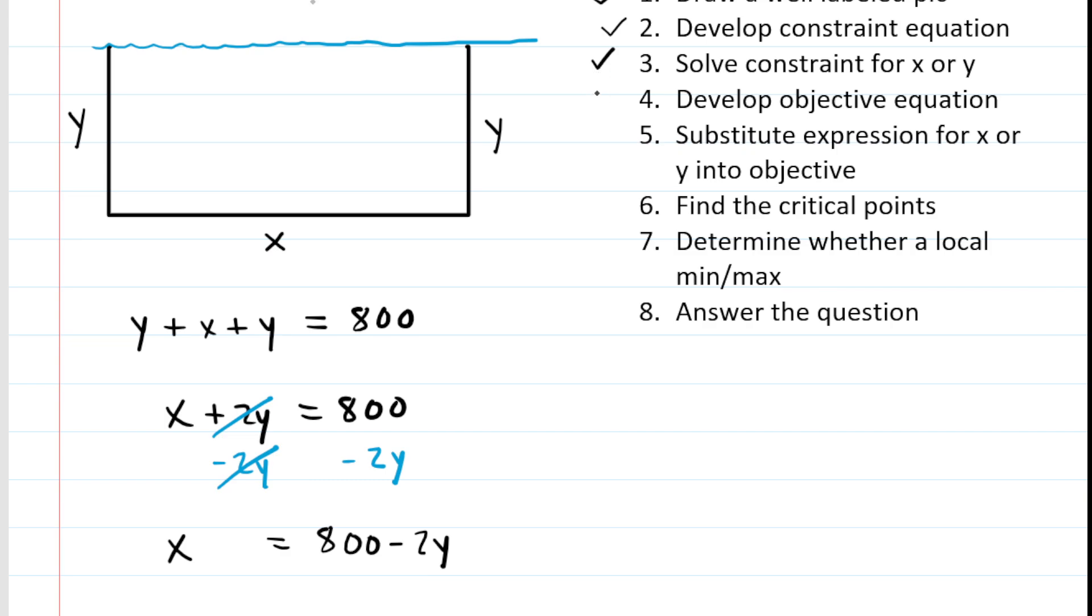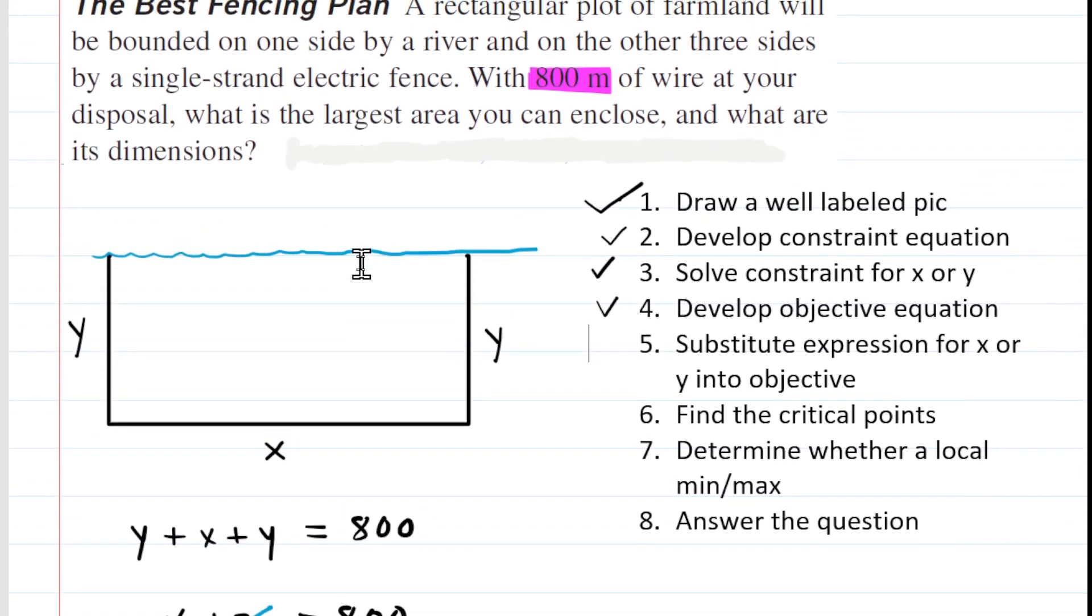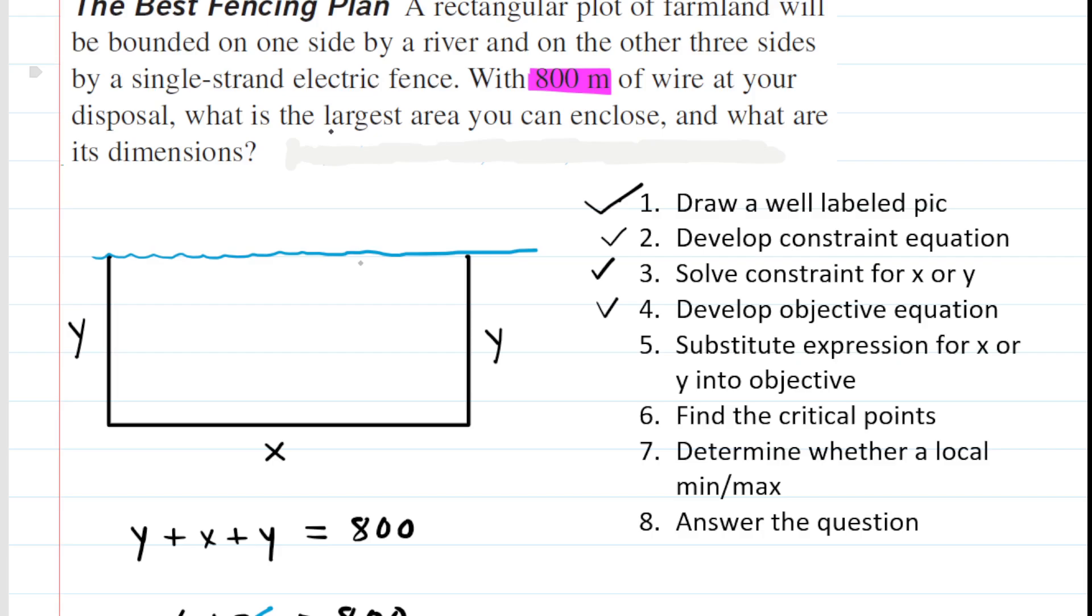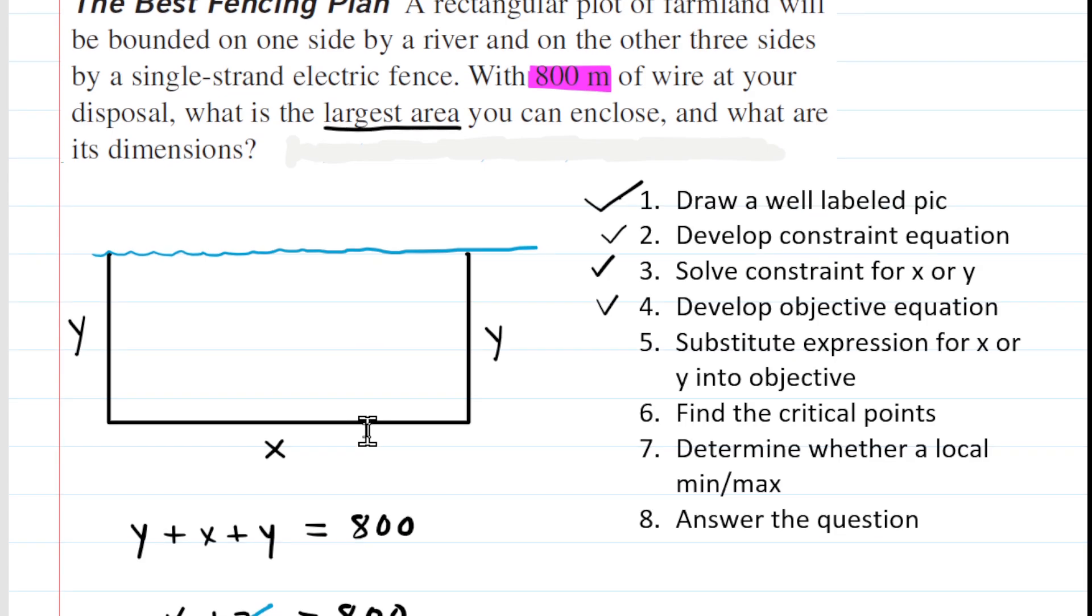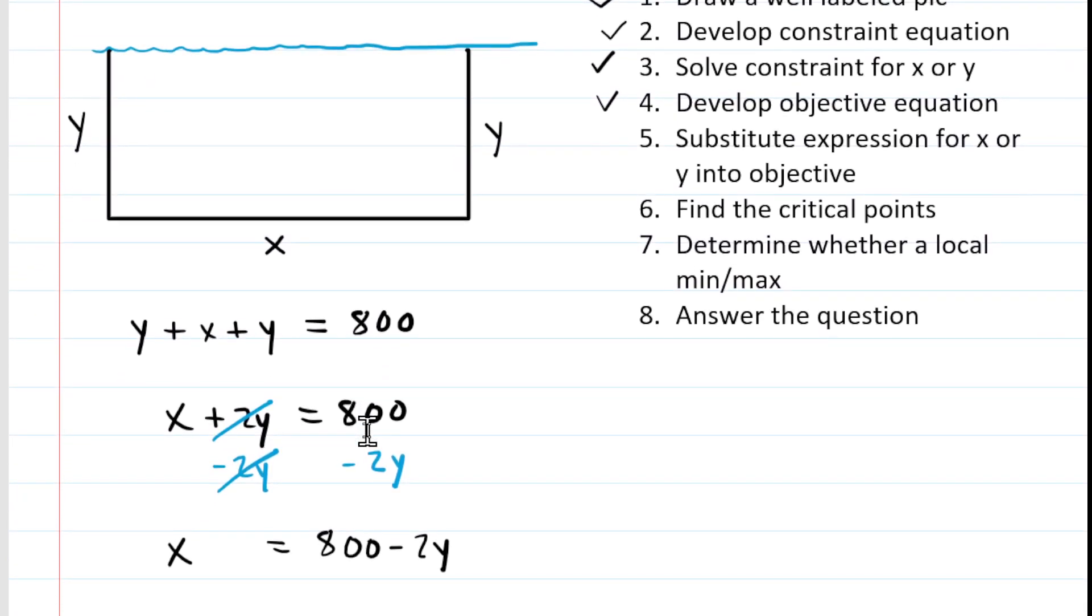In step four, we have to develop a so-called objective equation, which means we have to ask ourselves: what are we actually seeking to maximize or minimize? This question asks us to determine the largest area, so we're trying to maximize the area of this rectangular plot of farmland. We need to develop an equation for the area of this rectangular plot. The area of a rectangle equals its length multiplied by its width. Based on the labels in our drawing, the area equals x times y. This is our objective equation.